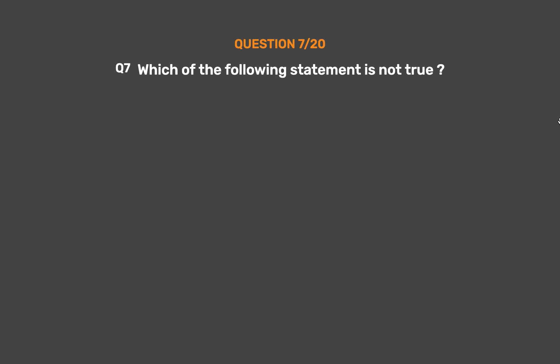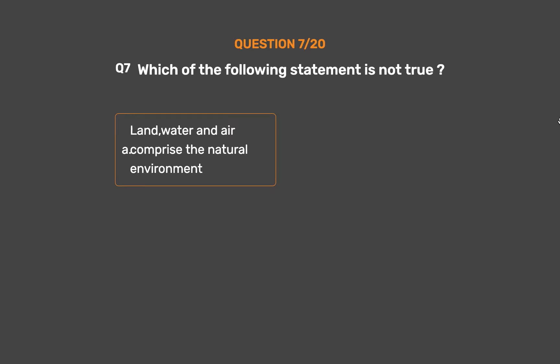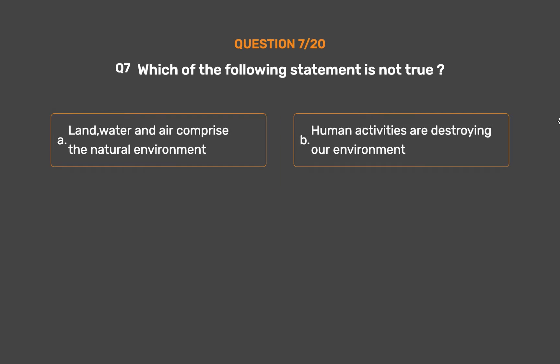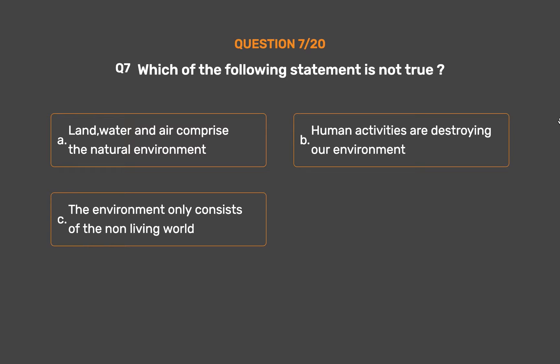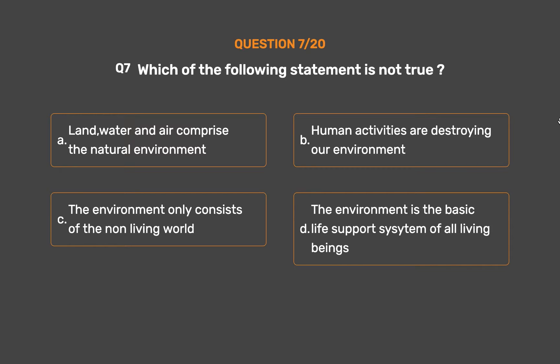Question No. 7. Which of the following statements is not true? Option A: Land, water, and air comprise the natural environment. Option B: Human activities are destroying our environment. Option C: The environment only consists of the non-living world. Option D: The environment is the basic life-support system of all living beings.